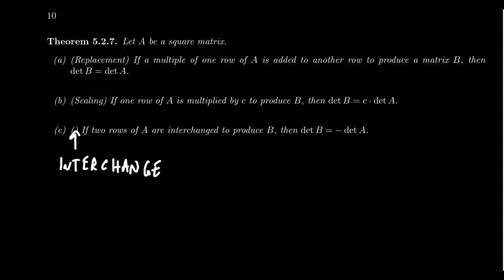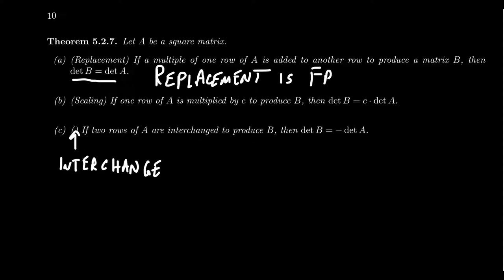If we perform the replacement operation to a matrix — that means we have a row and we add a multiple of another row to it — how does that affect the determinant? The cool thing is it does nothing. Replacement is free.